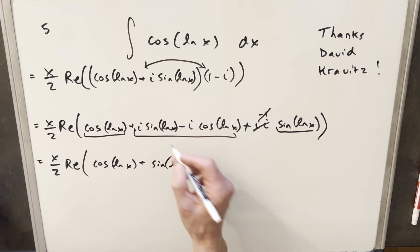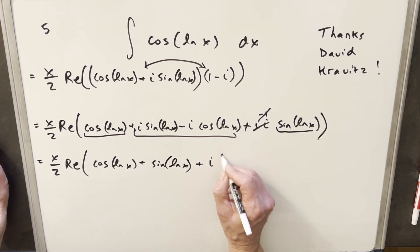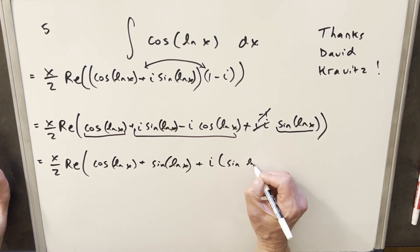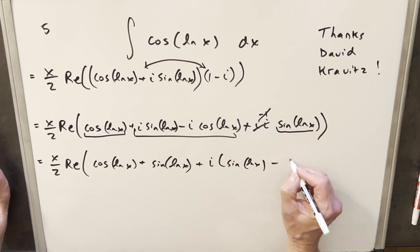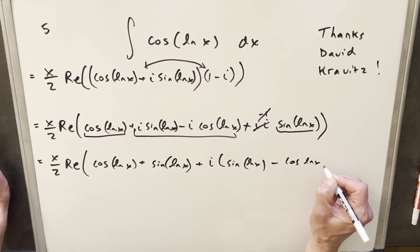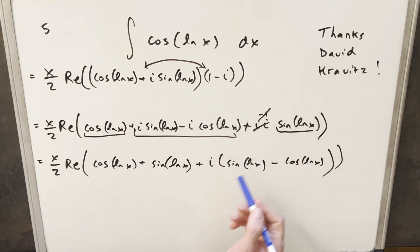And then here, what I'm going to do is I'm just going to factor an i out in front. So we have i times sine ln x minus cosine ln x. And then we can look at this as a plus bi, where this is going to be our a and this is going to be our b.